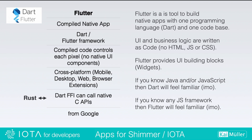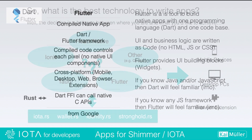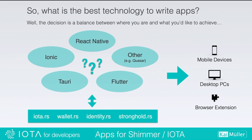Rust can be integrated into Flutter by Dart's foreign function interface. After this summary — what is the best technology to write apps? The answer is: it depends on your knowledge and what you'd like to achieve. There are other solutions like Quasar, which is based on Rust and Vue.js, but I focused on the four mentioned frameworks.